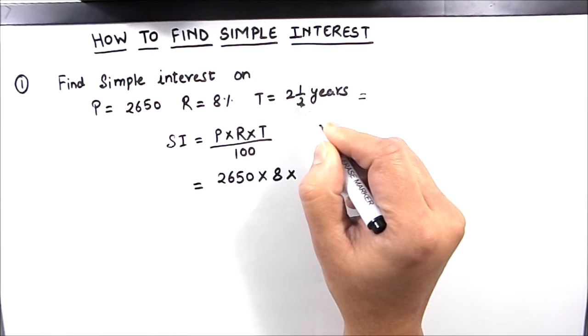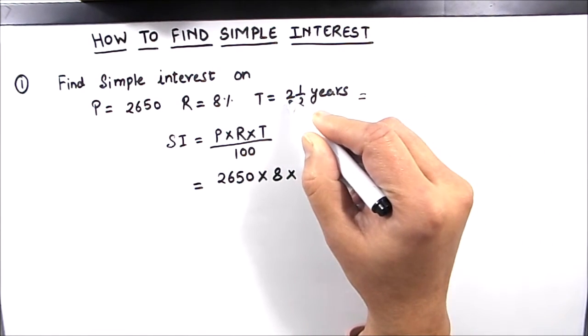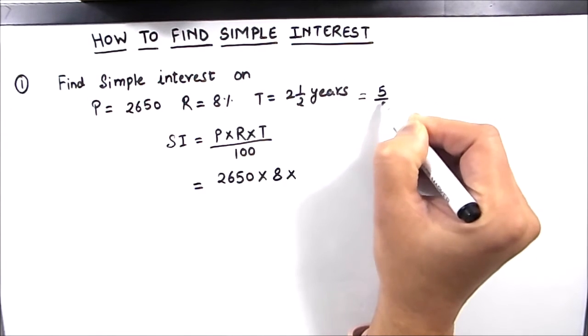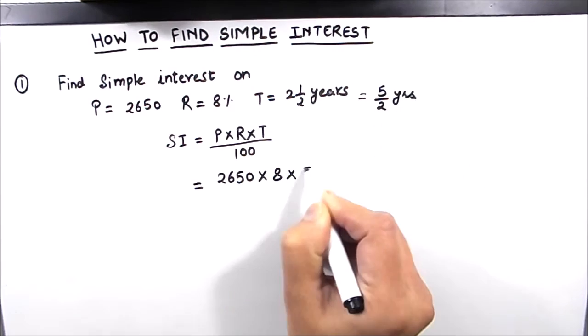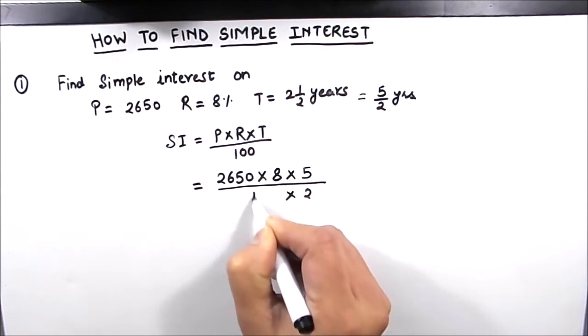We will convert this 2 and a half years into an improper fraction. So this will be 2 times 2 is 4, 4 plus 1 is 5. So this is 5 by 2 years. T we will put 5 by 2 years times 100.